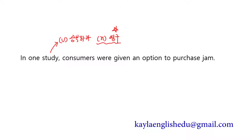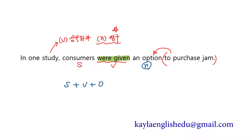소비자들에게 잼을 구매하는 옵션이 주어졌다. 여기서 중요한 건 수동태가 주어져 있는데, 원래는 주어+동사+목적어 나오는 문장에서 목적어를 주어로 바꿔 쓰고 동사를 be동사+과거분사로 쓰는 것을 수동태 문장이라고 합니다. 수동태 문장에서는 목적어가 주어 자리로 올라가죠.